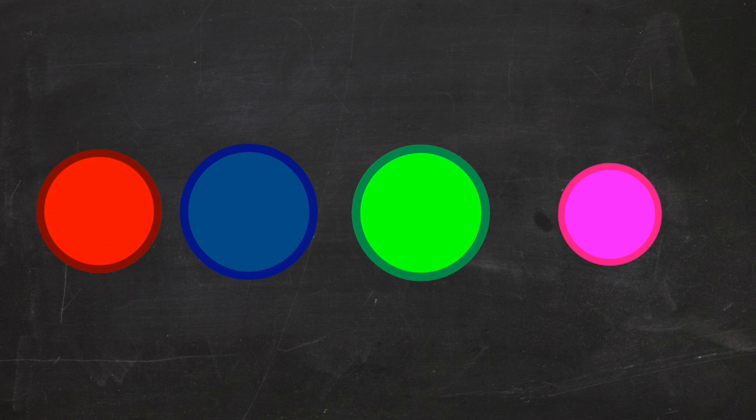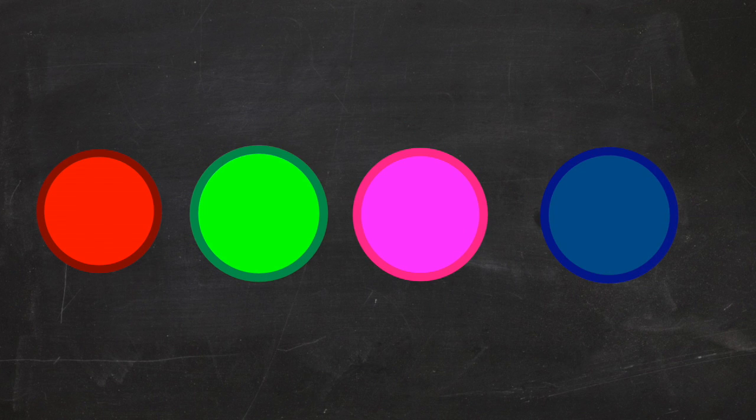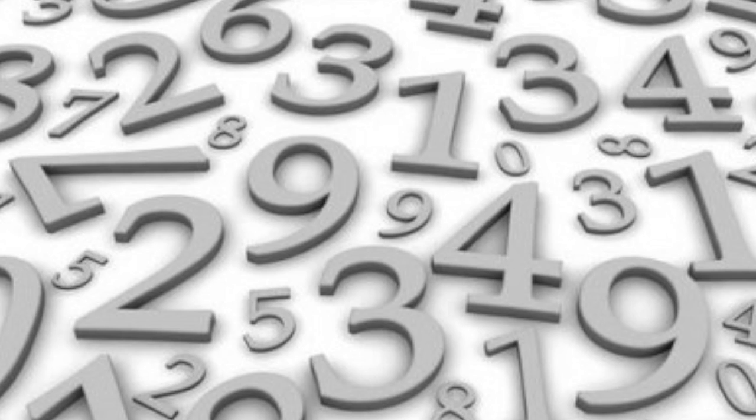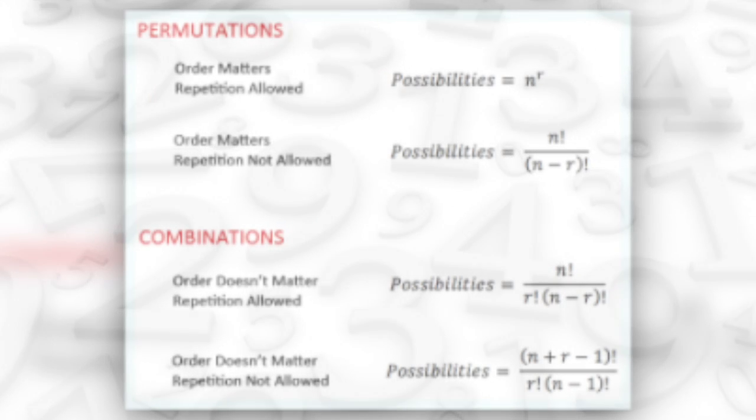Red, blue, green, pink, red, green, pink, blue, you get the idea. And so you don't have to count out all the possible placements, there are formulas.